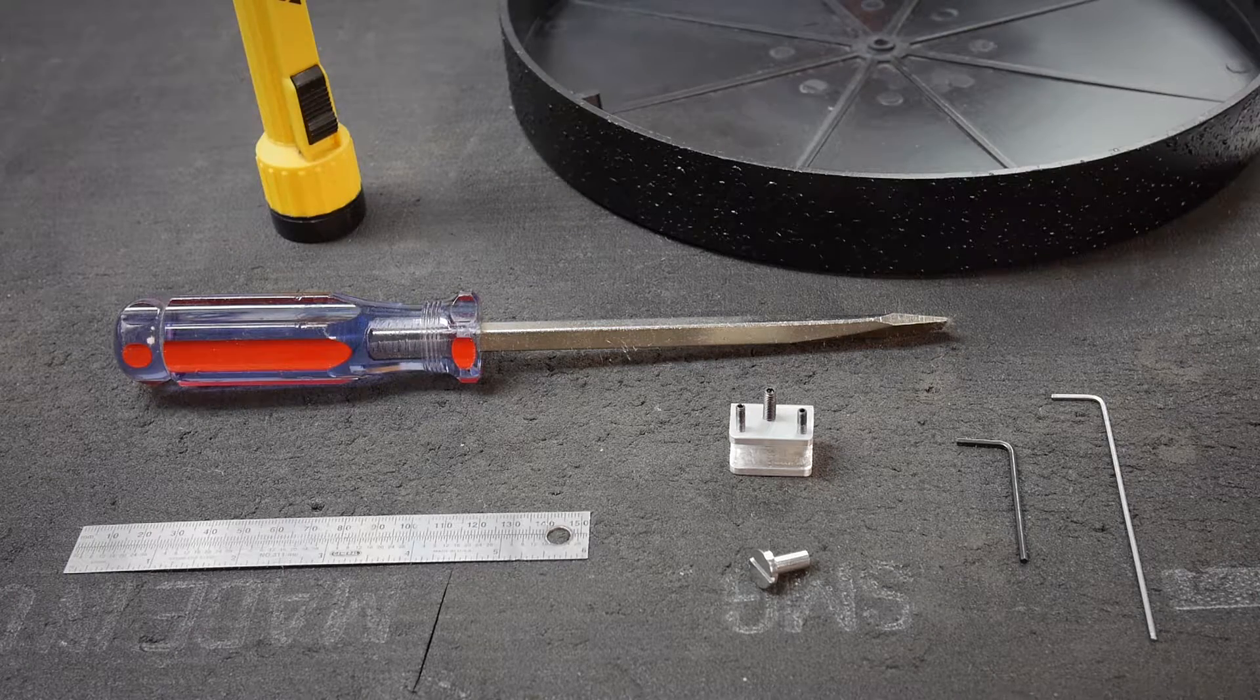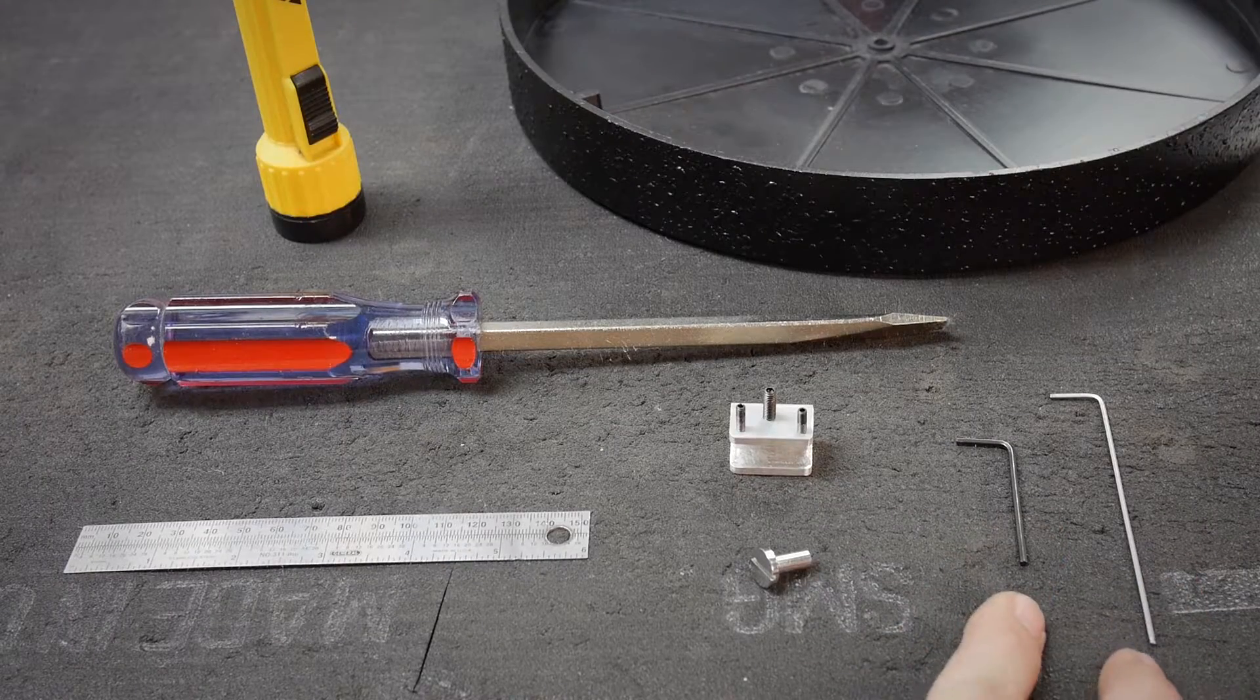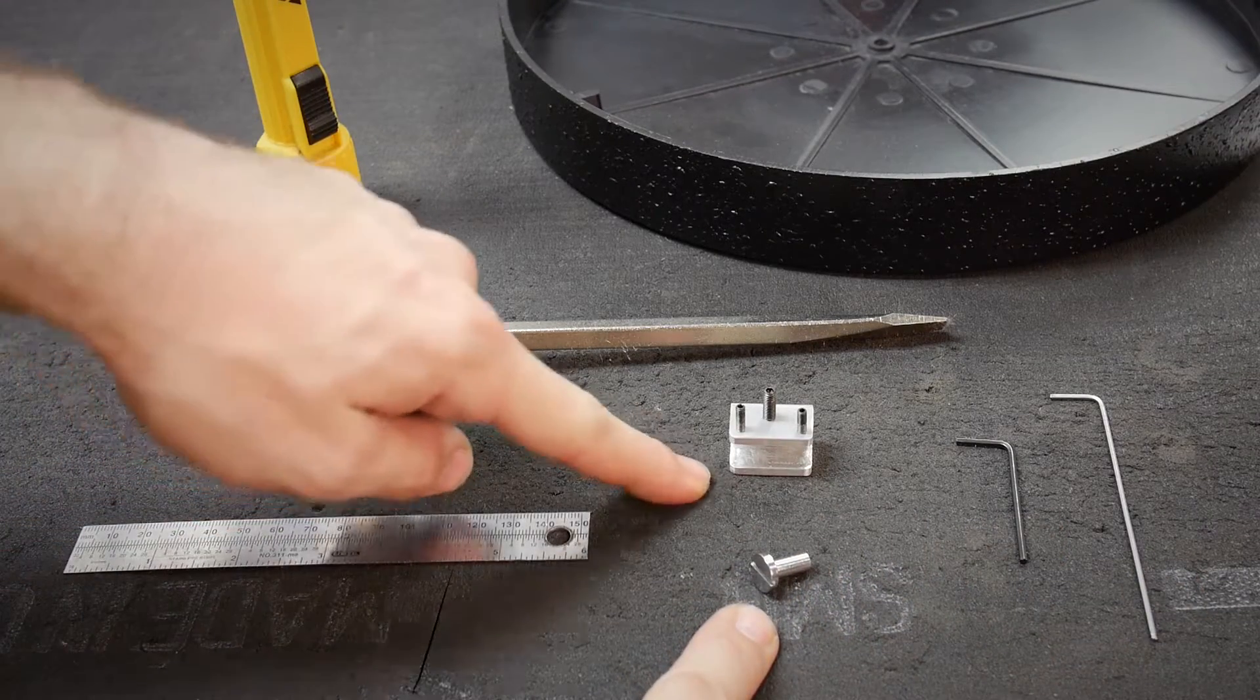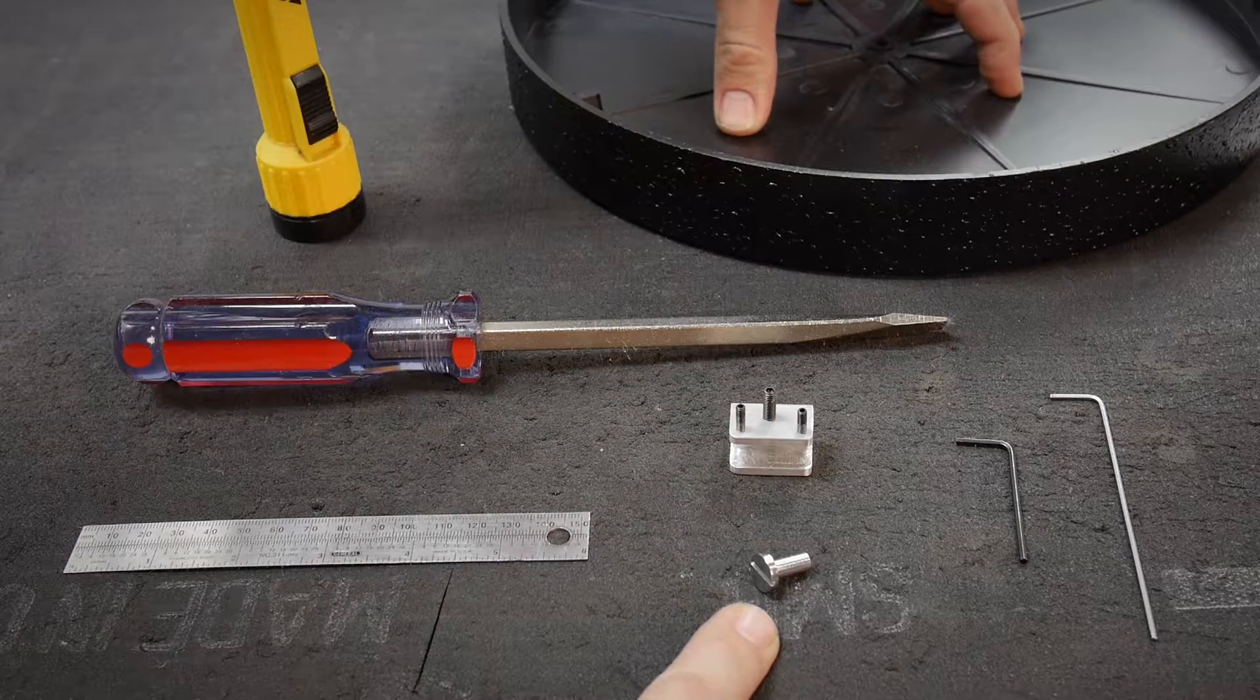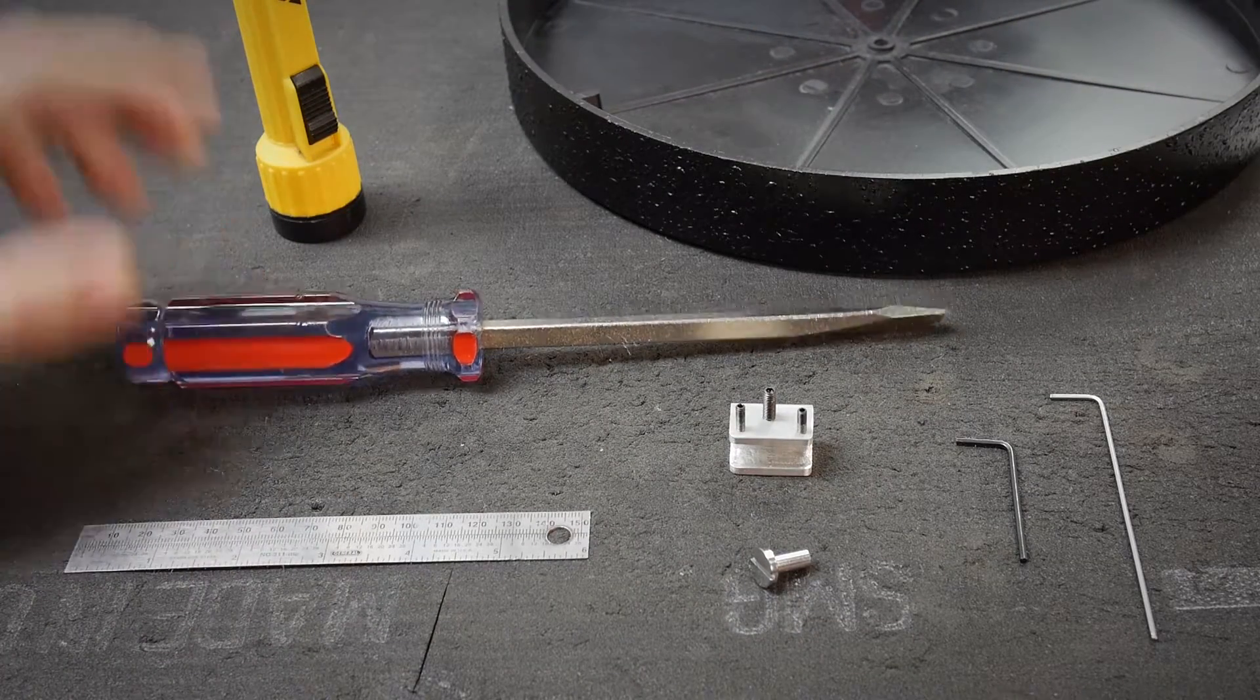Okay, really quick, I'm just going to show you guys some of the required things to have. Now here we have the included two Allen wrenches, the screw cover, the mounting bracket itself, and the resonator. And then it would also be good to have on hand a six inch ruler, a flat blade screwdriver, and a flashlight.